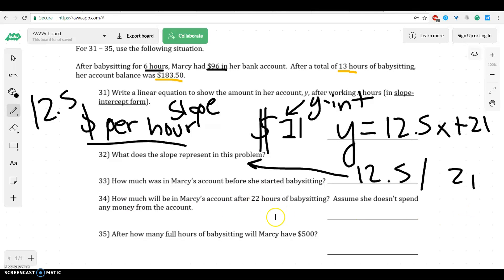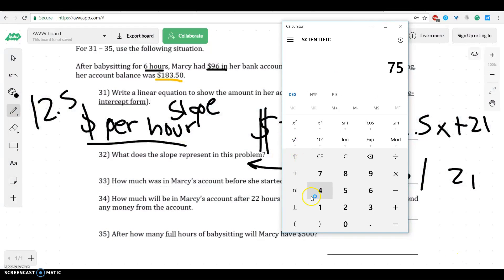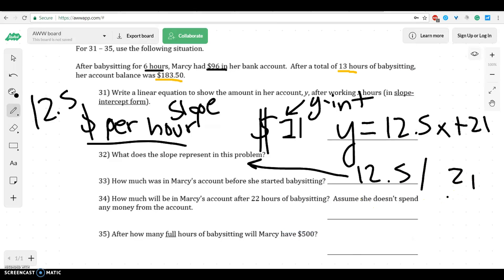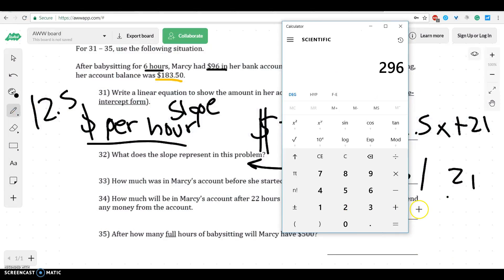How much money will be in her account after 22 hours, assuming she doesn't spend any money? Well, that's not too bad to do. We just have to do 22 times $12.50. And she would make $275 from babysitting plus the additional 21 that she started with. So if she doesn't spend any money, she would have $296.